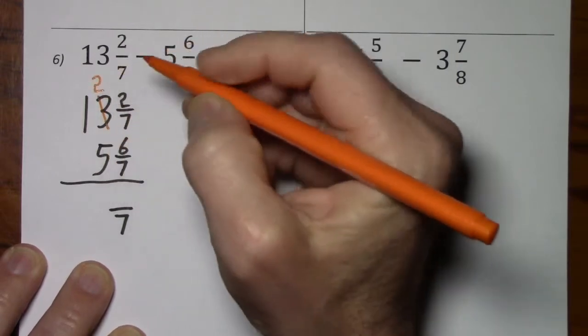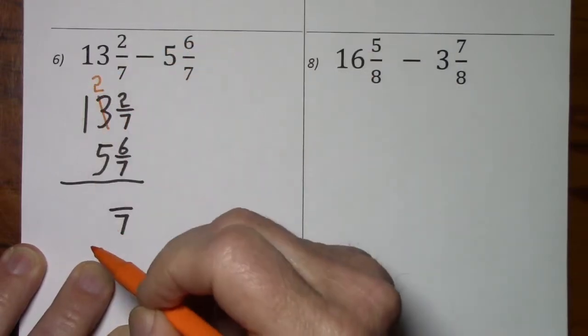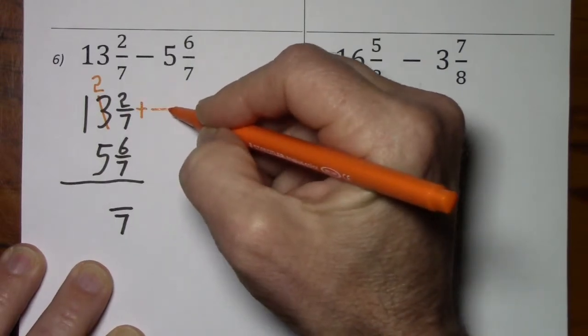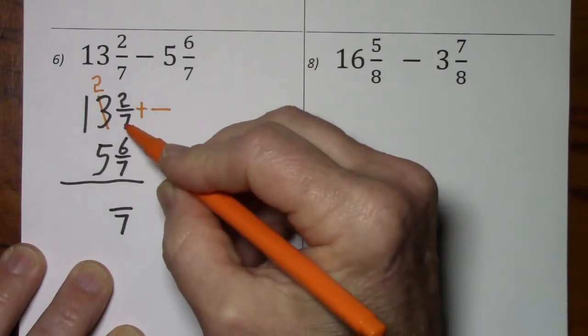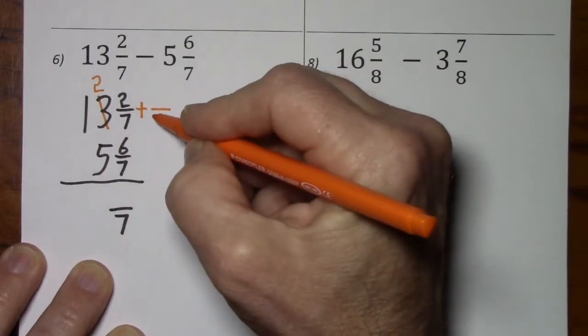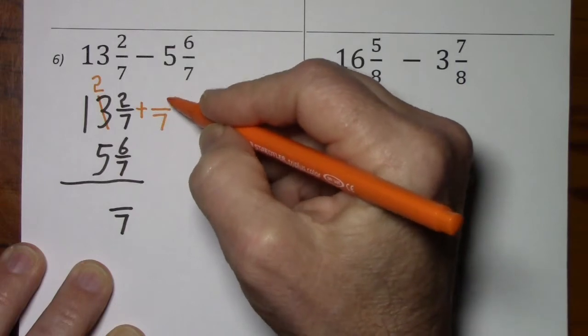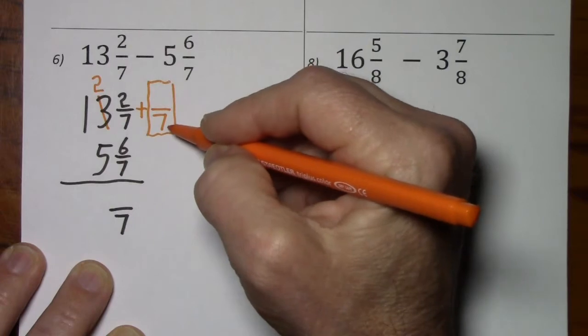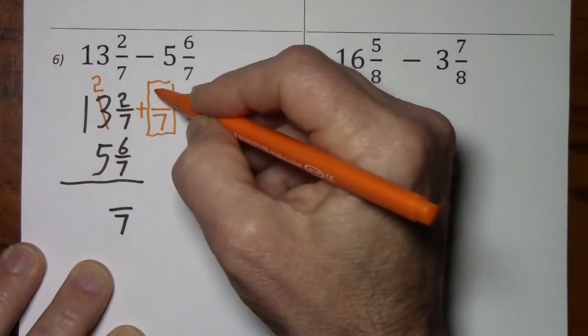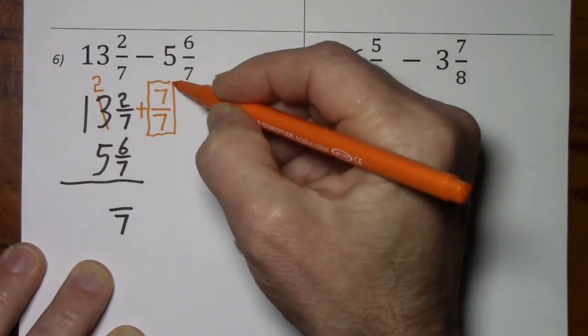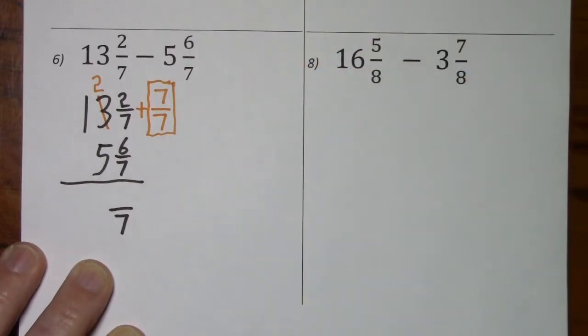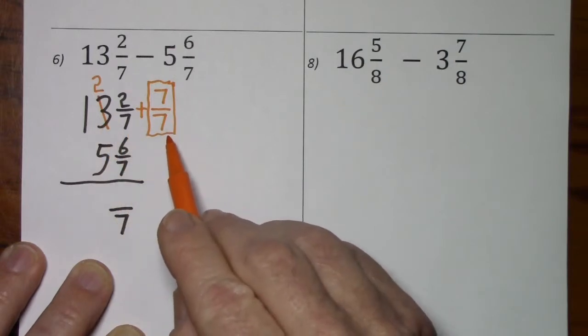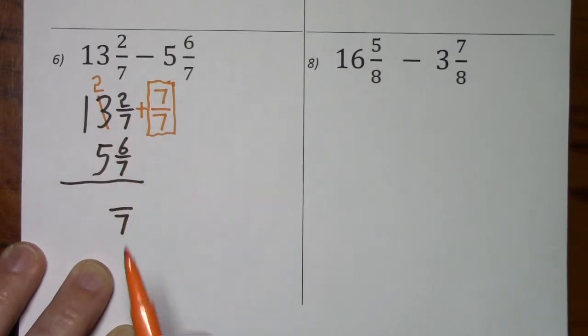So 3 becomes 2, or 13 becomes 12, and I need to add it to 2 sevenths. That means I need common denominators. If this is a 7, I'm going to write this 1. I'm adding a 1 here. So that means the numerator has to be 7. So again, I borrow 1 from the 3, and this is the 1 that I borrowed. Now I'm adding it to the 2 sevenths.